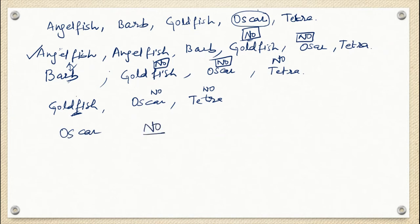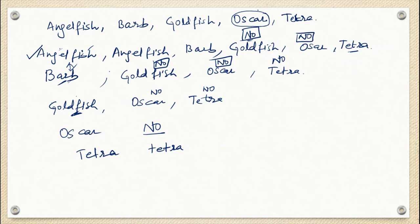I also came to know that tetra will go with angel fish, and I can keep all five tetras. With so many things being told to me, I'm just going to get confused about what I have to do. These confusions and many calculations can be avoided using matrix.